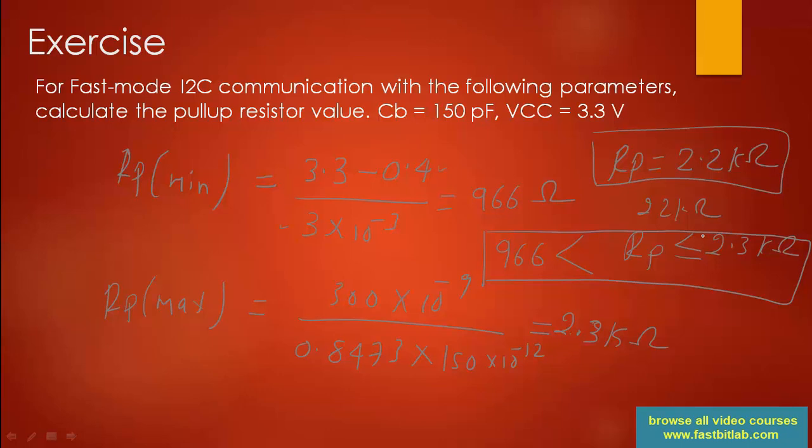For all exercises in this course, you don't need an external pull-up resistor. You can test with the internal pull-up resistance of 40 kΩ because we don't have many devices on the bus and the wire length is very short, so bus capacitance will be less than 100 pF. However, if you are developing a product based on I2C protocol, you must calculate the correct pull-up resistor value by respecting TR and accounting for bus capacitance.